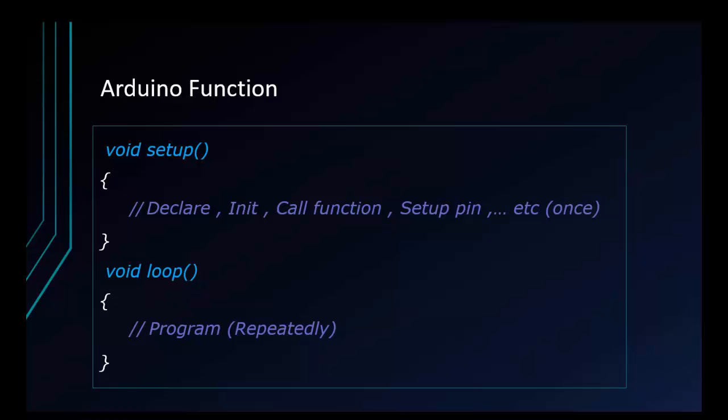Your program runs forever inside the loop function until you disconnect the power from the Arduino. This is because we need a device to run continuously all the time — to check sensors, check weather, check button states, etc. That's the reason why we have a loop function.